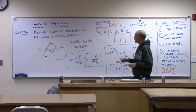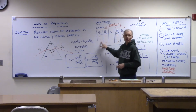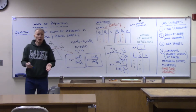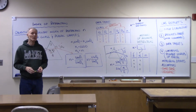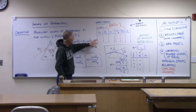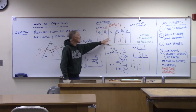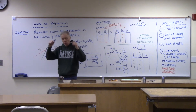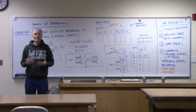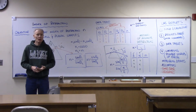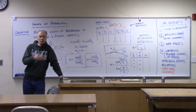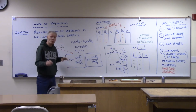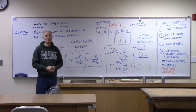We want to try different values of theta one, see what the theta twos are, and calculate our n's. Then we want to check if the numbers that are showing up in that column are similar to each other. We're expecting, based on how the formula has been derived, that the value of n should keep coming out roughly the same.